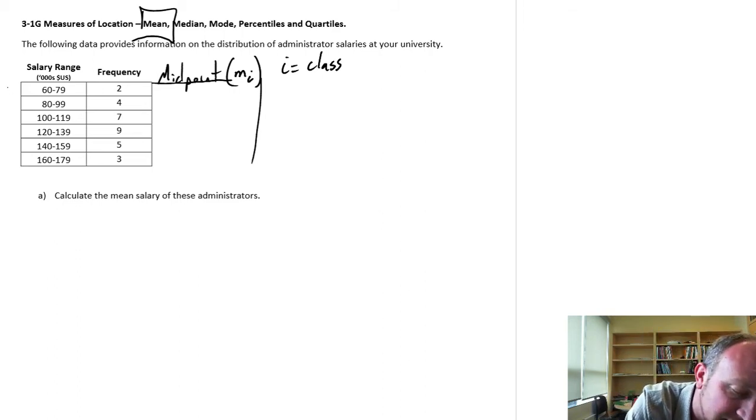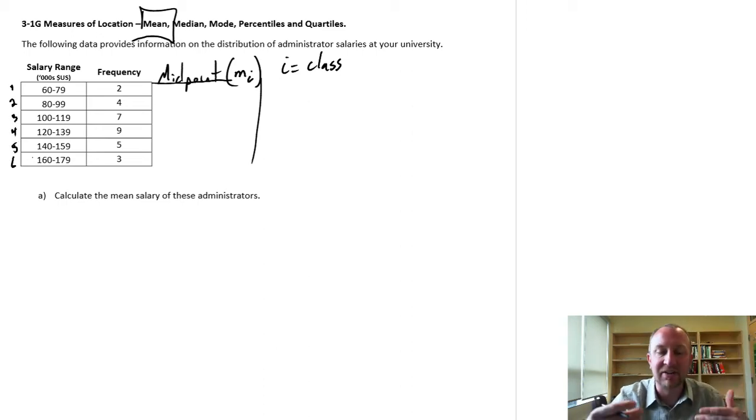So here I have how many classes? 1, 2, 3, 4, 5, 6. So I have six classes and I'm going to calculate the midpoint of each of those.